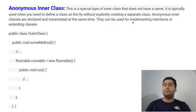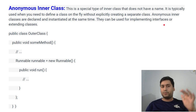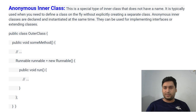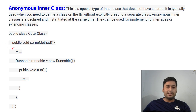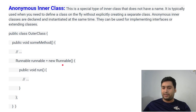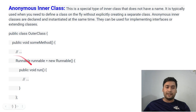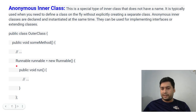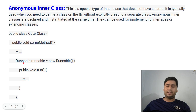Anonymous inner classes can be used for implementing interfaces or extending classes — primarily for providing implementations of interfaces. For example, inside a method we want to implement Runnable, which is an interface available in threading. Runnable is a functional interface and we can provide its implementation directly with anonymous inner classes, or with lambda expressions and method references. That is possible.